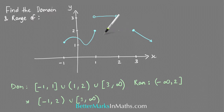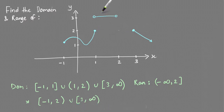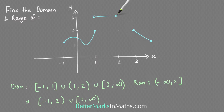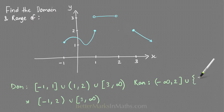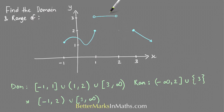That first part covers both of those two sections of the graph. Then the last part here is supposed to be a horizontal line, and the y value anywhere along that line is 3. So you have union of the value 3, written as a set with just that one particular value. That's how you write it when it's just one specific value, as in the case of a horizontal line like that. So that's the range and the domain for that example.